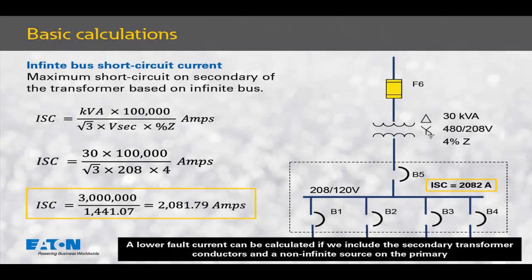The next calculation we need to make is the short circuit current on the primary. To get this number, we'll calculate the secondary infinite bus short circuit current and reflect that to the primary. Putting our math to work for infinite bus short circuit current calculations, we calculate 2,081.79 amps on the secondary, which we'll round up to 2,082 amps. This is based on a 30 kVA transformer with 4% impedance.